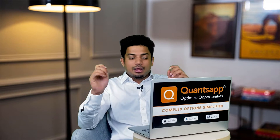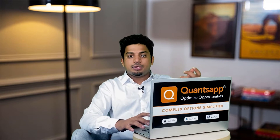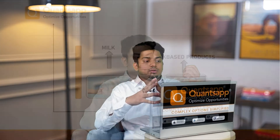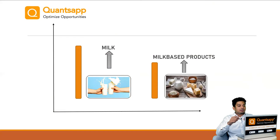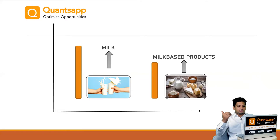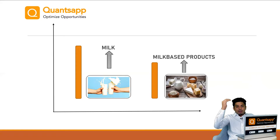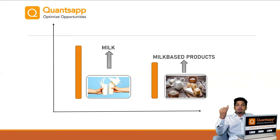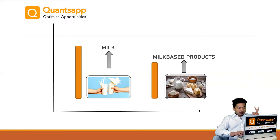Let's take a practical example to make it simpler. There are two products — the first one is milk, and the other one is milk-based products. As and when milk prices go up, at the same time milk-based products like butter, paneer, and ghee — those prices will also go up.